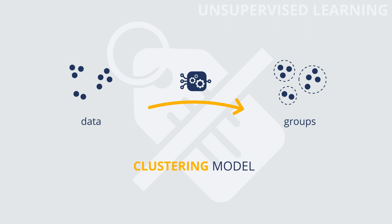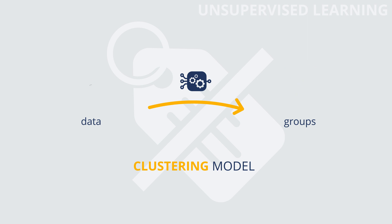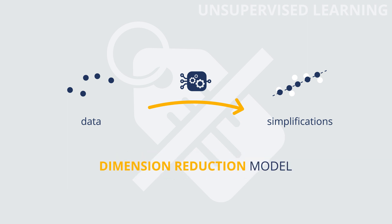An example of a clustering model would be a model that segments customers of a company based on their profiles. Otherwise, if we have a model that transforms data and represents them with a smaller number of features, we would talk about a dimension reduction model. An example of this would be a model that summarizes the multiple technical characteristics of some cars into a few main indicators.